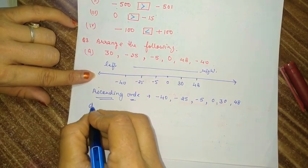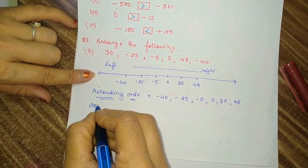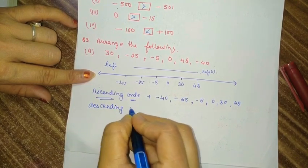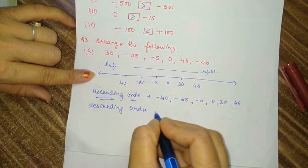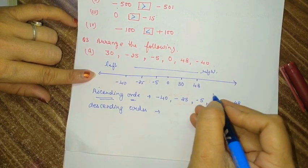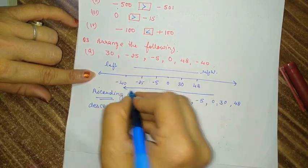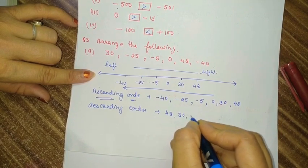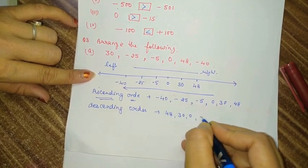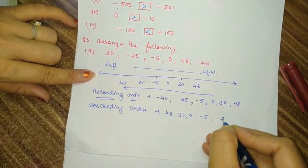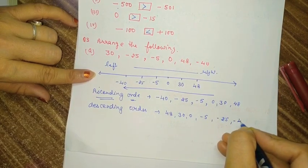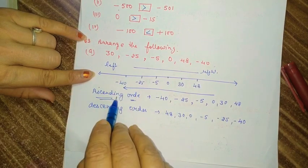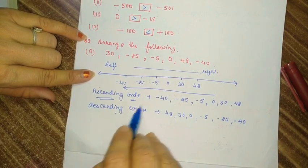Same, if we have to arrange these numbers in descending order, we write from right to left — that means from biggest to smallest. So first is 48, then 30, then 0, then minus 25, then minus 40. So we have arranged the given numbers in both ascending and descending order.